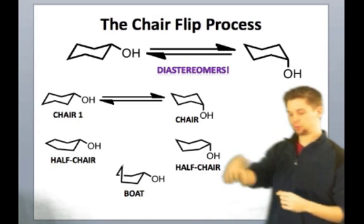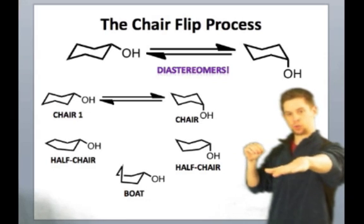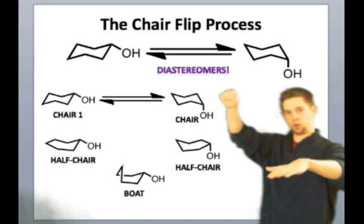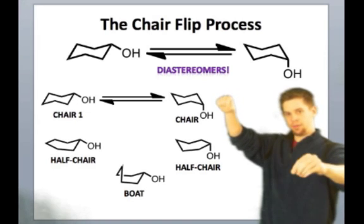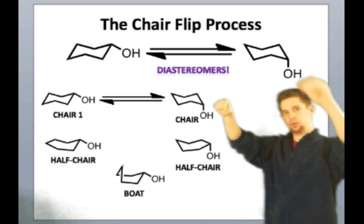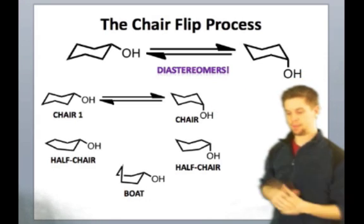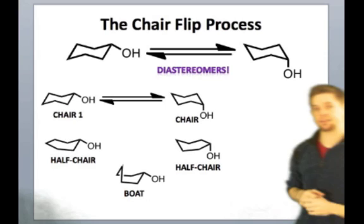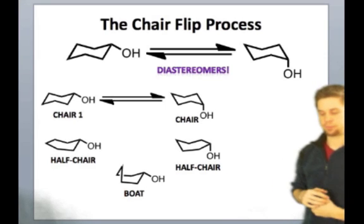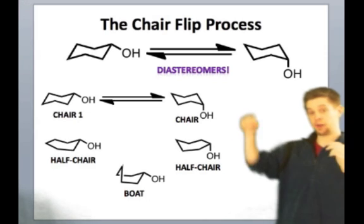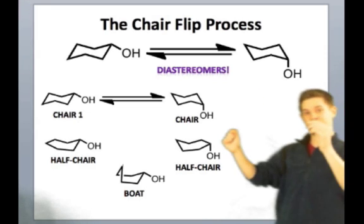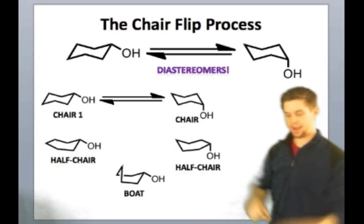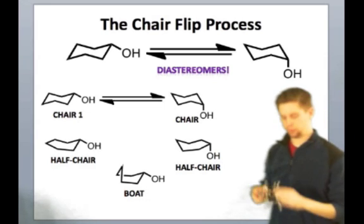Going through this sort of half chair where we have four carbons in a plane and that one carbon sticking up, that third carbon continues on and eventually we end up at this boat conformation, which is actually a transition state of this process. We then go on to another half chair where we start pulling down the other side. And finally, we get to the other chair.